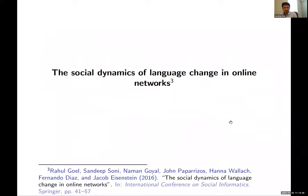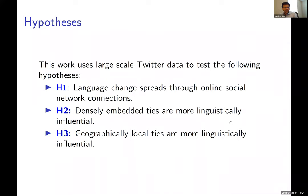The first study, done with collaborators at Microsoft Research, examined the social dynamics of language change in online networks. We wanted to test three hypotheses from Twitter data. The first is whether language change spreads through online social network connections at all — important because a lot of theory in sociolinguistics focused on propagation through geography, not social network connections, and prior evidence for social network propagation came from survey data rather than these online networks.